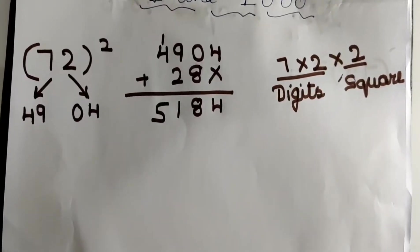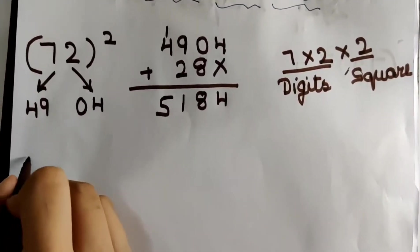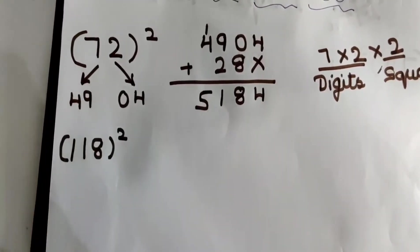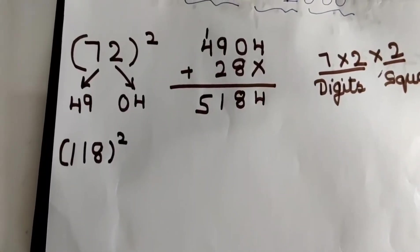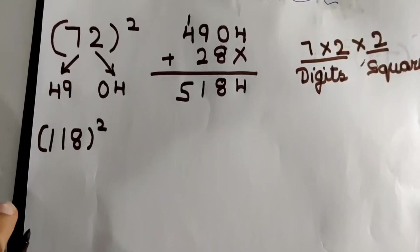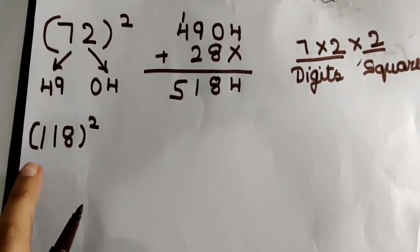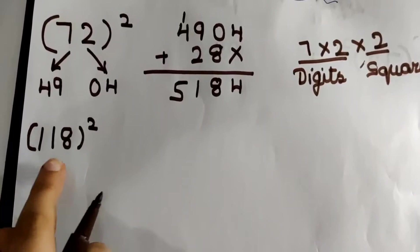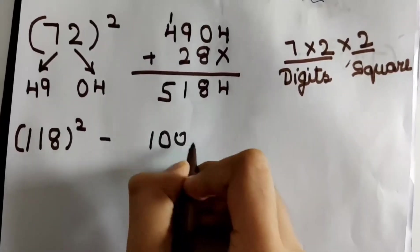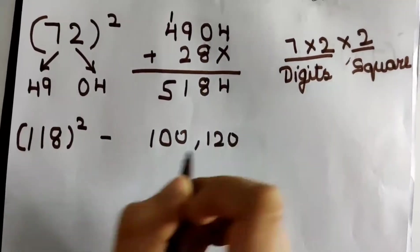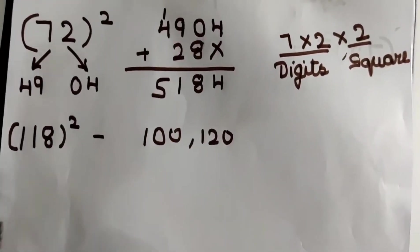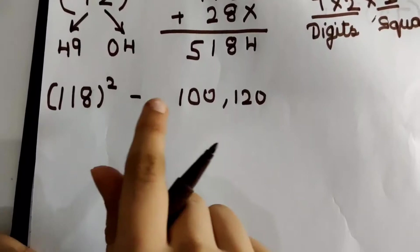Now let us take a 3 digit number. Let us take 118 square. Here comes the twist. In this, now what we have to do is first of all find the number closest to 118 that has a 0. The numbers closest to 118 that have a 0 are 100 and 120. We will solve the square of 118 by using both of these. But let us first use the round of number of 118 as 100.